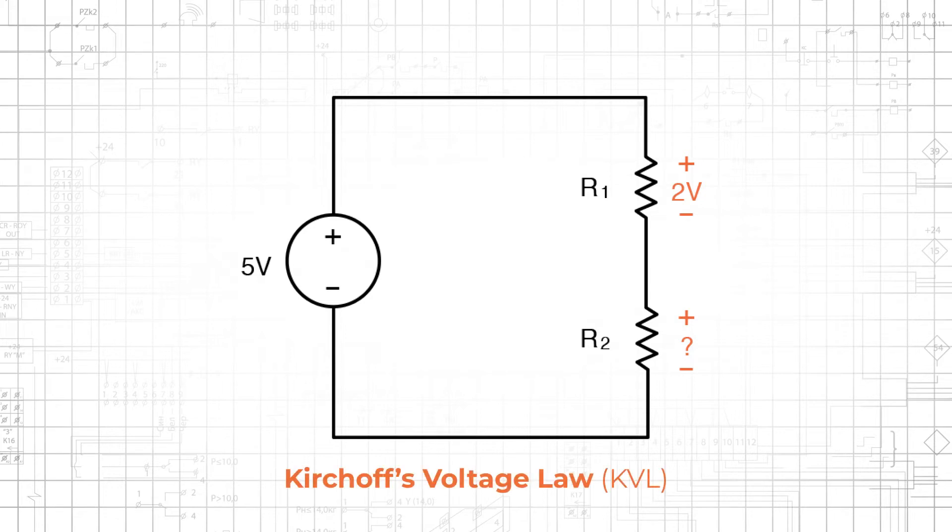Kirchhoff's voltage law, abbreviated KVL, tells us that the sum of the voltage drops in a closed circuit is equal to the voltage supplied by the source.